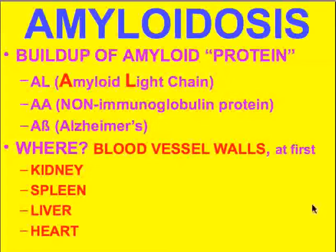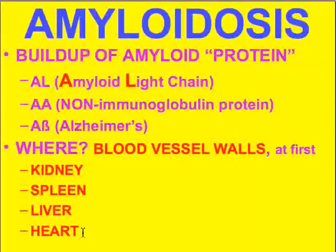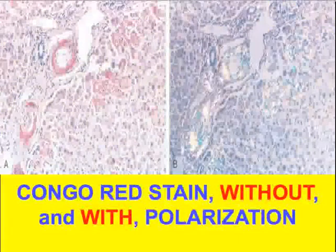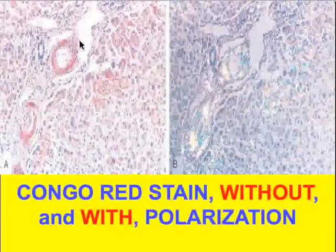Where does amyloid build up? It builds up primarily in blood vessels first. As the process becomes more extensive, it goes beyond the blood vessel itself and affects whole organs — like the kidney, spleen, liver, and heart — causing very significant organ dysfunction. The kidney is probably the single most common site.